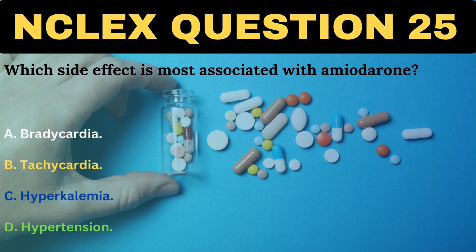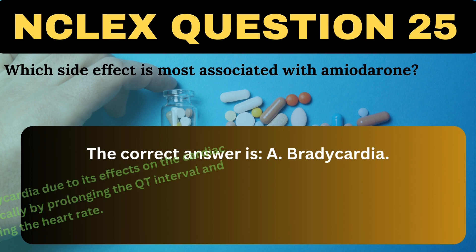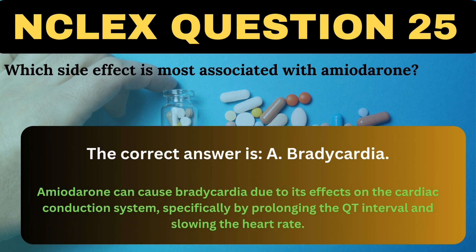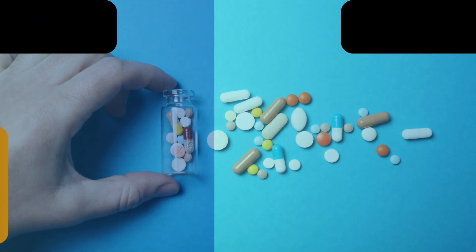Which side effect is most associated with amiodarone? A. Bradycardia. B. Tachycardia. C. Hyperkalemia. D. Hypertension. The correct answer is A, Bradycardia. Amiodarone can cause bradycardia due to its effects on the cardiac conduction system, specifically by prolonging the QT interval and slowing the heart rate.